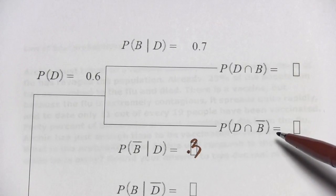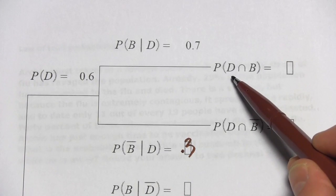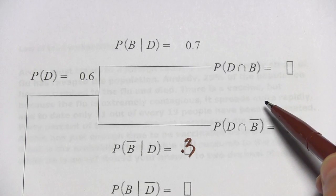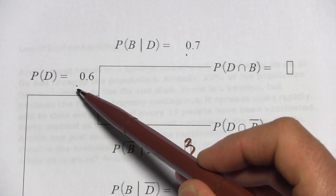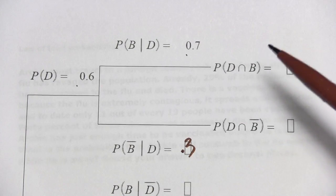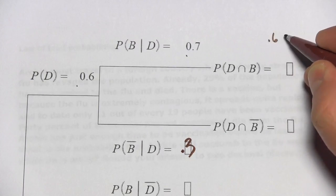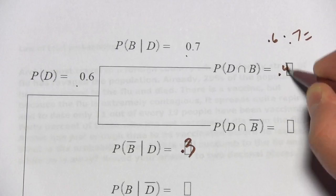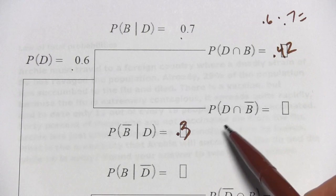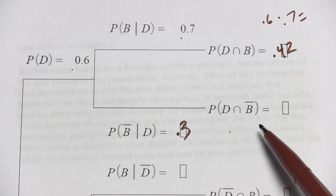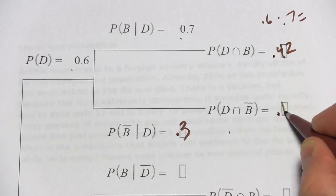This last part of the tree asks for the probability of the intersection of going to the discussion sessions and getting a B or higher. That's just these two events: going to the discussion sessions and, given that they're going, getting a B or higher. We determine the intersection by multiplying: 0.6 times 0.7 equals 0.42. The same for the other branch: the probability of going and not getting a B is 0.6 times 0.3, which equals 0.18.